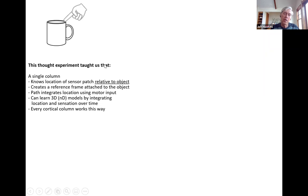We also knew that path integration is occurring, because as you move your finger relative to the object — not even looking at it, just moving — you could predict in advance what you're going to feel. Therefore, you have to be able to predict in advance where your finger is going to be. So there's some sort of path integration occurring. This idea that there was a reference frame attached to an object in a single column was a revelation.